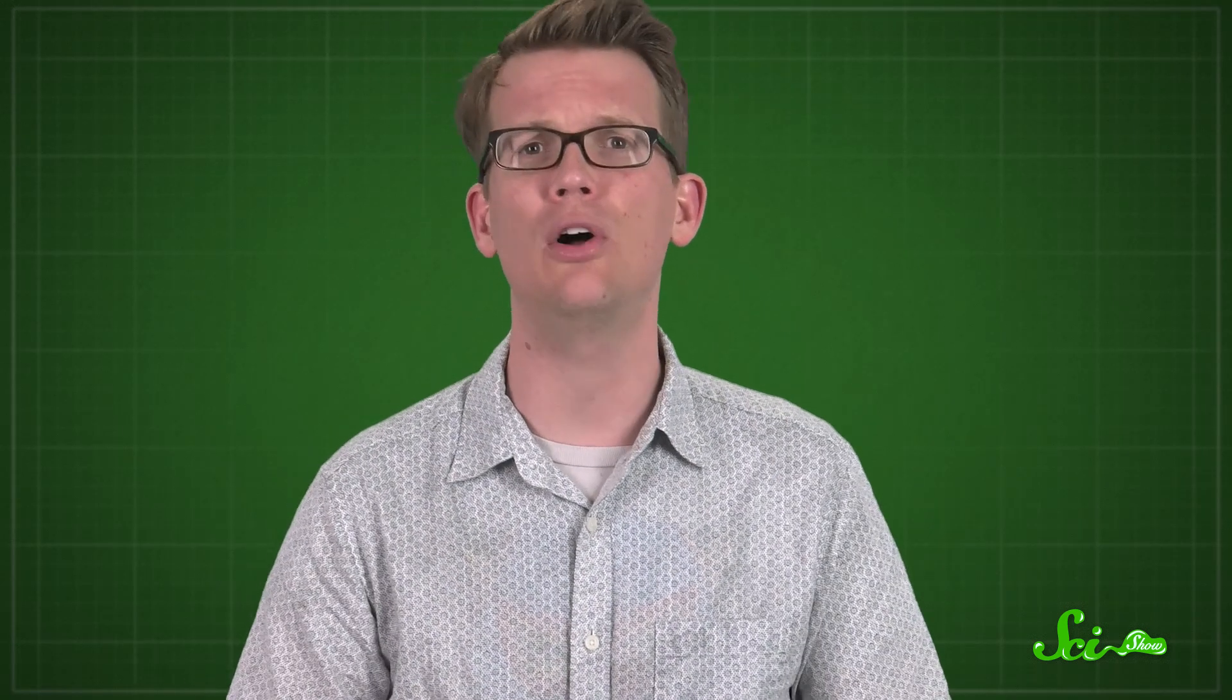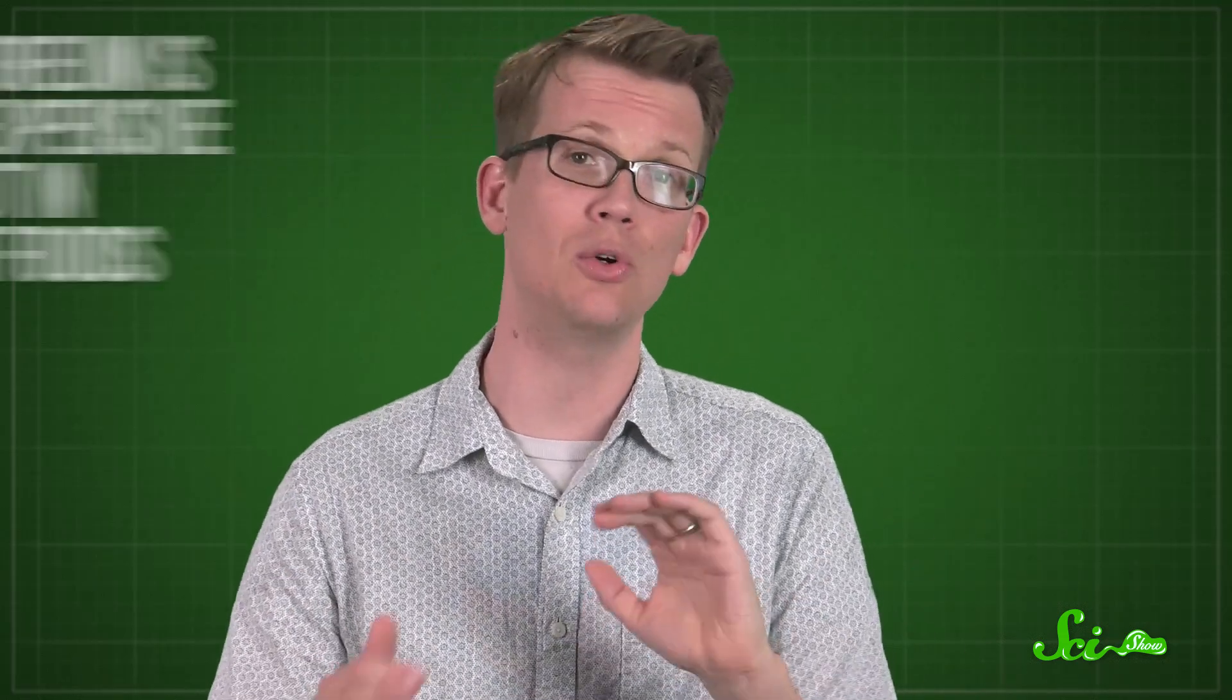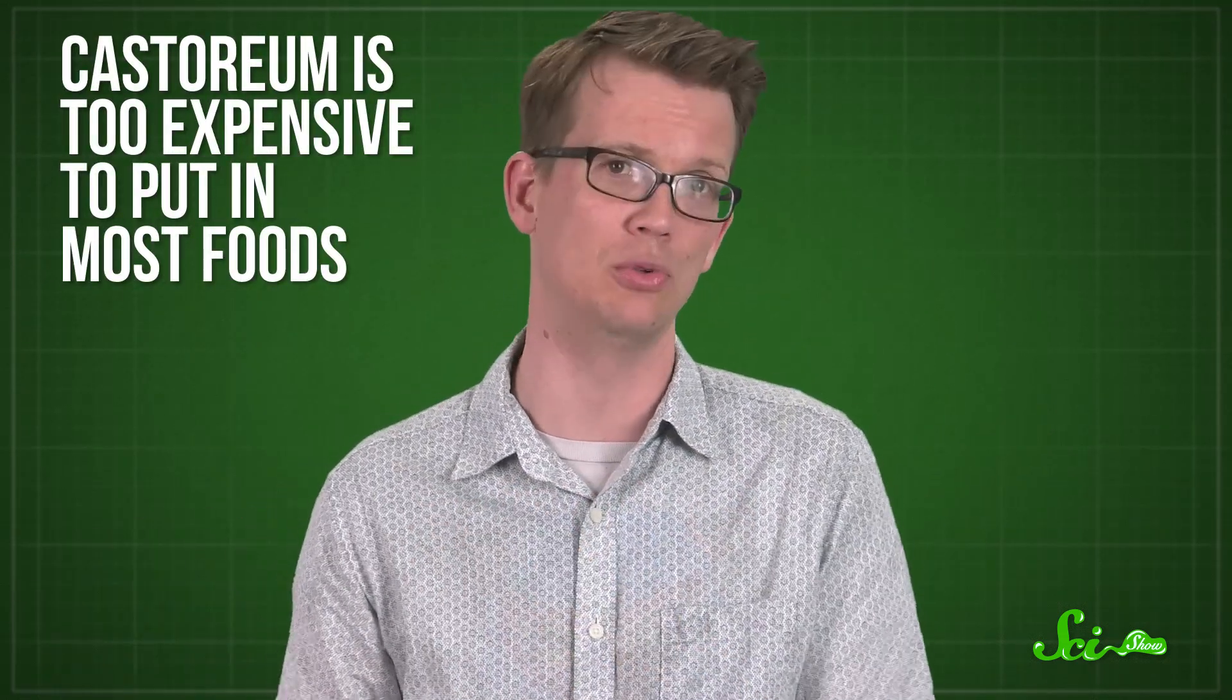There is another natural way to get vanilla flavor, with something called castoreum. But that's not likely to be a fan favorite. That's because it comes from the castor sacks of beavers, which are located down near their tails, basically flavoring via beaver butt. Milking beavers for their secretions is not exactly a high-volume industry either, so castoreum is too expensive to put in most foods.